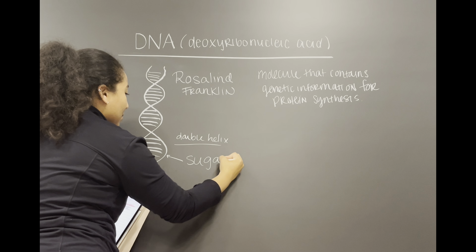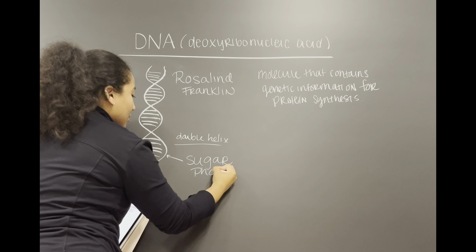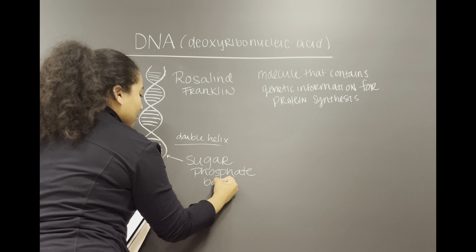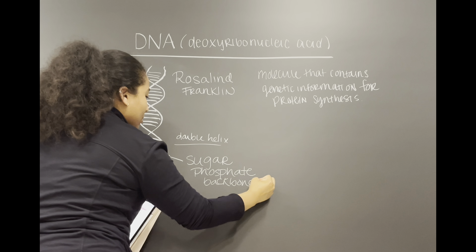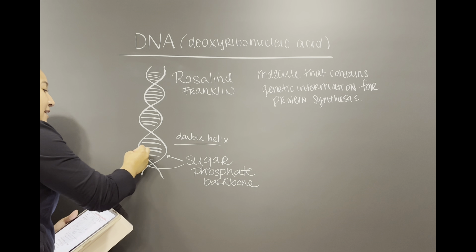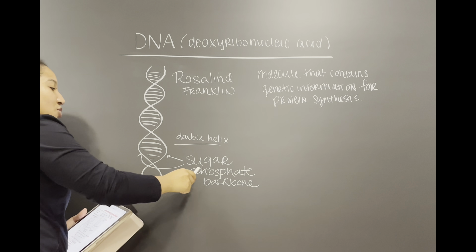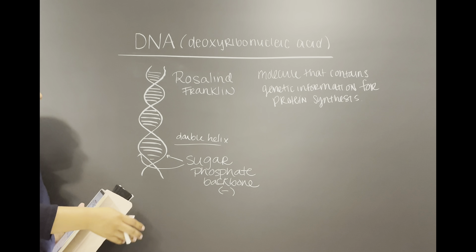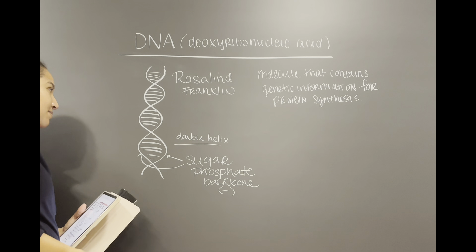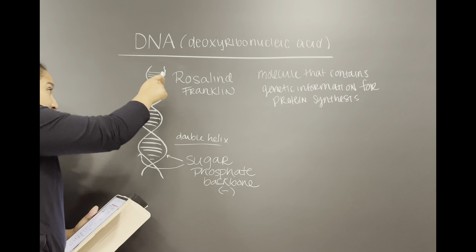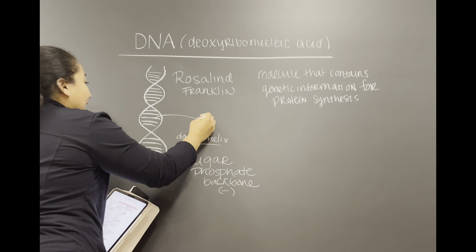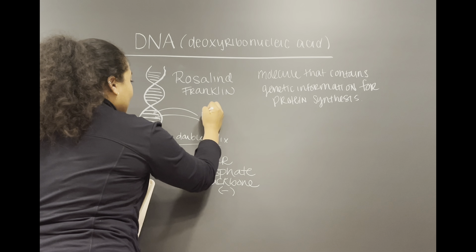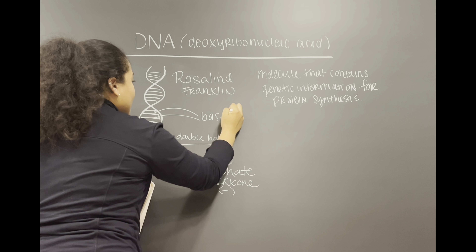What you really need to know about DNA is that it has some basic components. The first component is the sugar phosphate backbone — that's the backbone of DNA. The twists you see here represent the sugar phosphate backbone, and it's going to be negatively charged because it's a negatively charged compound ion.